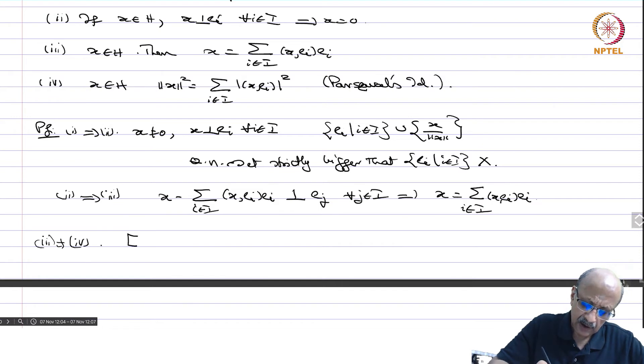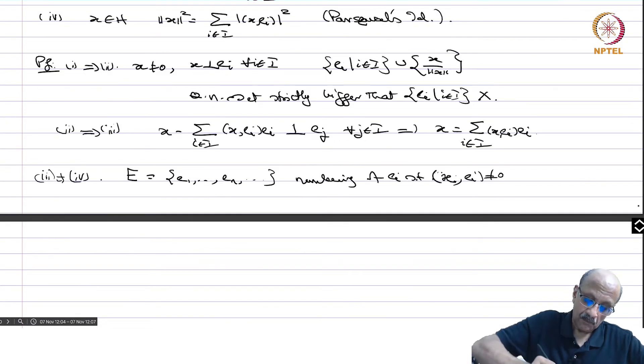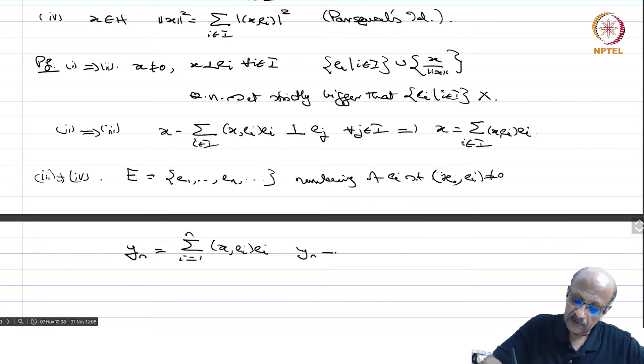And therefore it implies 4, 3 implies 4. We set E to be numbering. E1, EN is numbering of EI such that x EI is not 0 and you take YN to be equal to sigma i equals 1 to N, x EI, x EI, EI.